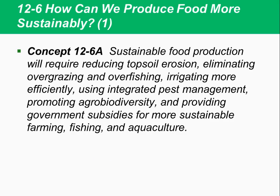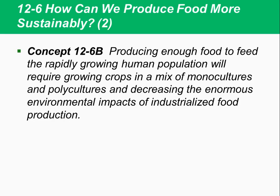Welcome to Chapter 12 Continued. This is Agricultural Solutions — how we can produce food more sustainably. Sustainable food production will require reducing topsoil erosion, eliminating overgrazing and overfishing, irrigating more efficiently, using IPM, promoting agrobiodiversity, and providing government subsidies for more sustainable farming, fishing, and aquaculture. Producing enough food will require growing crops in a mix of monocultures and polycultures and decreasing the enormous environmental impacts of industrialized food production.